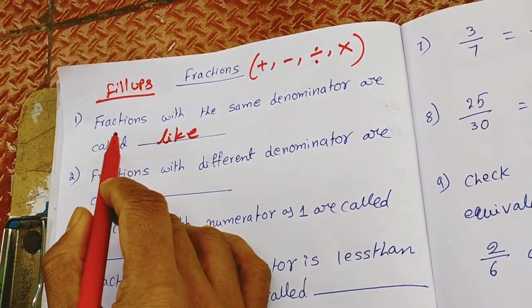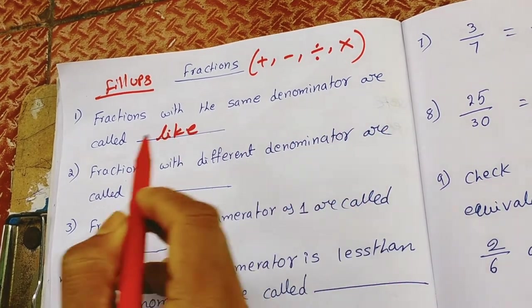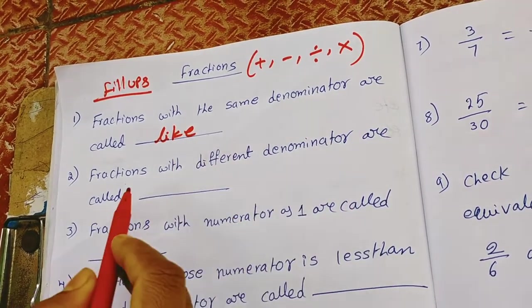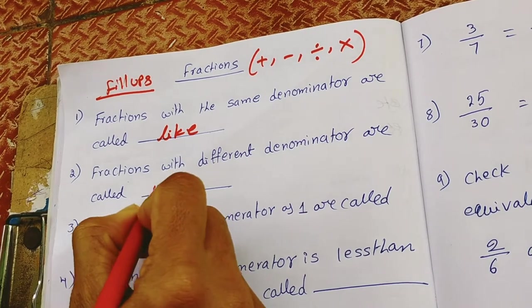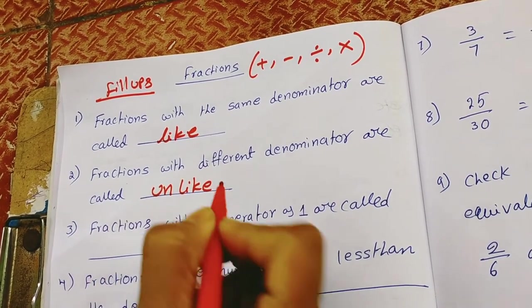First one is, fractions with the same denominator are called like fractions. Fractions with different denominators are called unlike fractions.